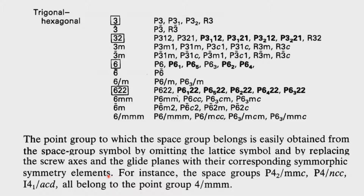The point group to which a space group belongs is easily obtained from the space group symbol by omitting the lattice symbol and replacing screw axes and glide planes with their corresponding symmorphic symmetry elements. For example, for the space group P6522, you delete the P, make 65 into 6, and get the point group 622. Given a space group we can determine the point group, and given the point group we can predict all possible space groups. For 3-fold symmetry there are 1, 2, 3, 4 possible space groups.